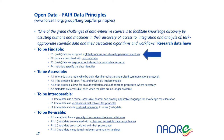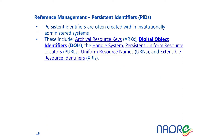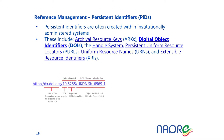I want to talk about one of the important FAIR principles, the so-called F1, which calls for the need for globally unique and eternally persistent identifiers. Persistent identifiers are often created within institutional administrative systems. There are ARKs, digital object identifiers, handles, persistent uniform resource locators, uniform resource names, and extensible resource identifiers. A DOI is basically a unique string that identifies a prefix allocated to the organization and a suffix chosen by the organization as the unique identifier.